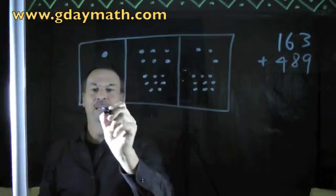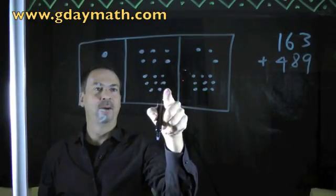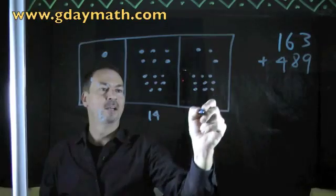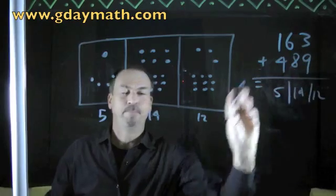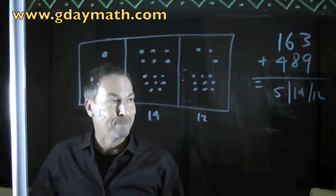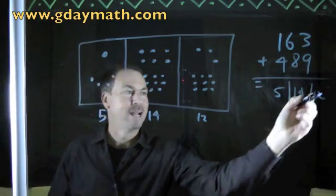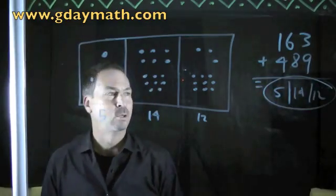clearly I have five hundreds, I have, what was that, fourteen tens, and I have twelve ones. The answer is five hundred fourteen-ty twelve-ty. And that makes absolute correct mathematical sense. The answer really is five hundred fourteen-ty twelve-ty.